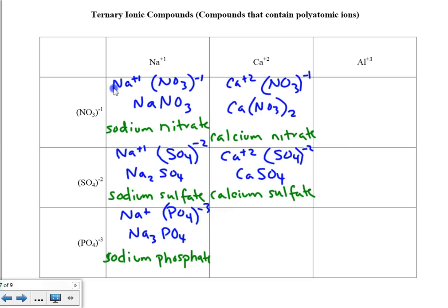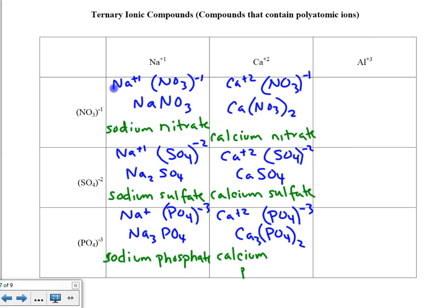Ca⁺² and phosphate minus 3. Crisscrossing, we get Ca₃(PO₄)₂. The name of this substance is calcium phosphate.